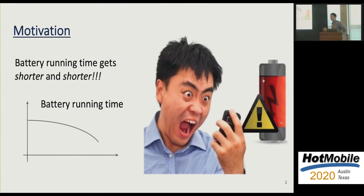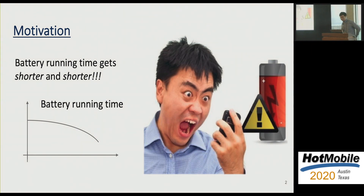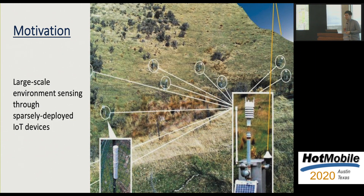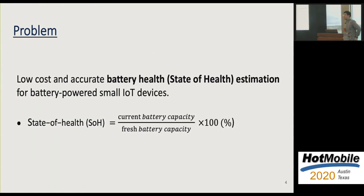Do you remember the time when you bought your new smartphone? My smartphone used to last over 12 hours, but now my phone is three years old and it lasts around six hours. This is the battery aging problem, where battery running time decreases due to the decrease of maximum capacity. This is not only a problem for smartphones — it has become even more serious for IoT devices, where we cannot check batteries one by one or easily manage replacement timing. We take up the problem of battery health estimation.